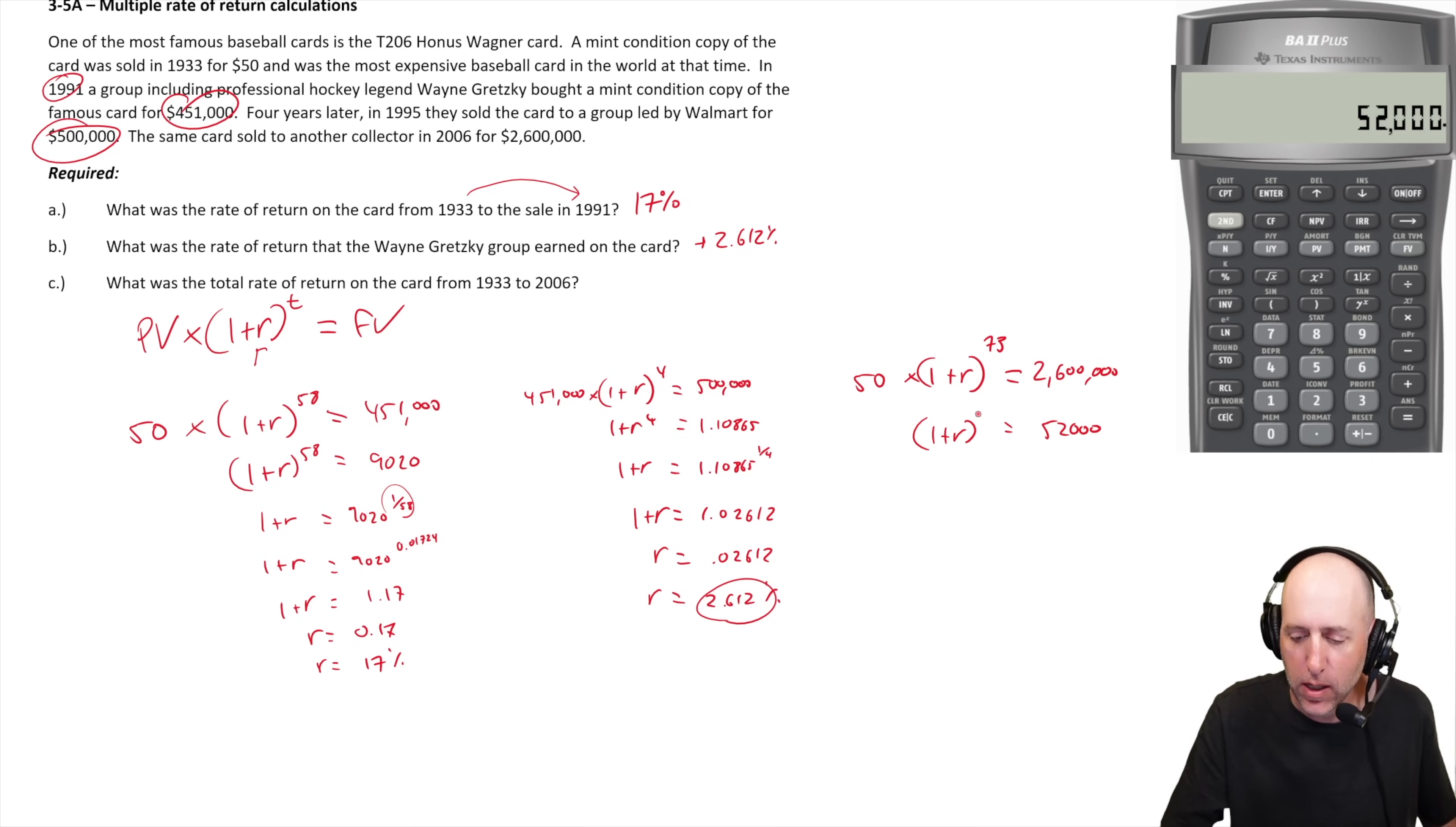One plus r to the 73 equals 52,000. We have to take each side and raise it to the power of one seventy-third. One divided by 73 is 0.0137. One plus r equals 52,000 to the power of 0.0137, which equals 1.1604. So r equals 0.1604, or 16.04 percent.